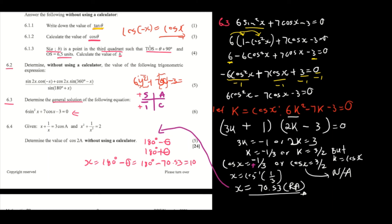So x equals 180° minus 70.53°, which gives 109.47°. Written neatly: x = 109.47° + 360°k, where k is an integer. Then for the third quadrant: x equals 180° plus 70.53° equals 250.53°. So x = 250.53° + 360°k, k an element of ℤ. That is how you find the general solution.